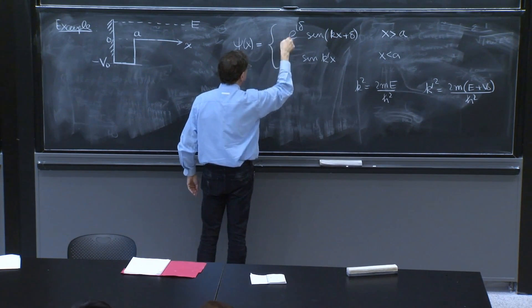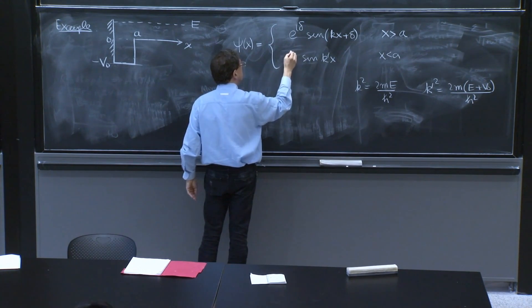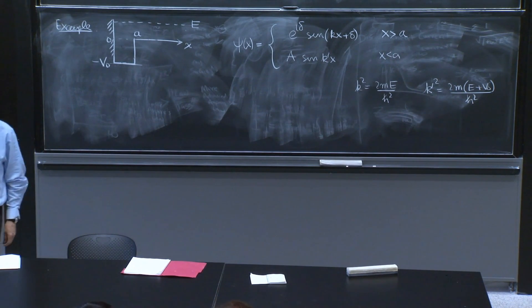You know, we didn't put the additional normalization here. We don't want to put that. But then we must put the number here. So I'll put it here. That's the ansatz, and that's k and k prime.